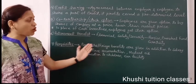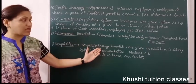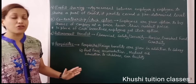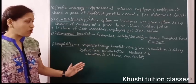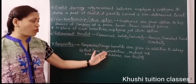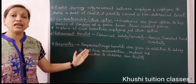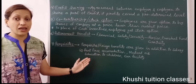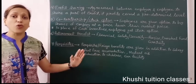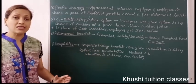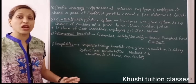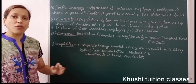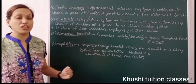Perquisites are also called fringe benefits. These are given in addition to the basic salary or wages. For example, rent-free accommodation — the company provides a house to the employee who pays no rent, but when the employee leaves service, they must also vacate the house. Government officers, for instance, receive rent-free accommodation.